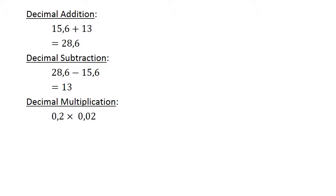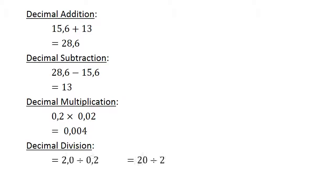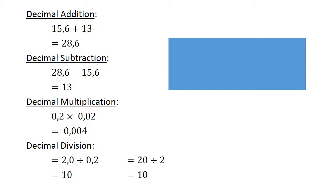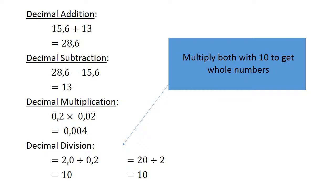Decimal multiplication: 0.2 times 0.02 equals 0.004. Decimal division: 2.0 divided by 0.2. We multiply both by 10 to get whole numbers: 20 divided by 2 equals 10.